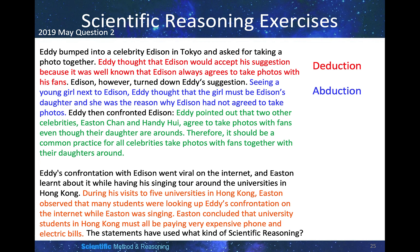Eddie then confronted Addison, pointing out that two other celebrities, Easton Chen and Handy Heu, agreed to take photos with friends even though their daughters were around. Based on these two data points, Eddie concluded it should be a common practice for all celebrities to take photos with friends even with their daughters present — so this is induction. Easton, learning about the confrontation while on a singing tour at five universities in Hong Kong, observed that many students were looking up Eddie's confrontation on the internet while he was singing. Easton concluded that university students in Hong Kong must all be paying very expensive phone and electric bills. This is abduction, because Easton is making a guess.